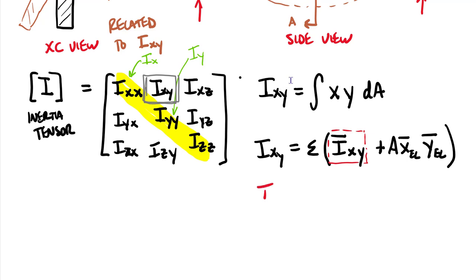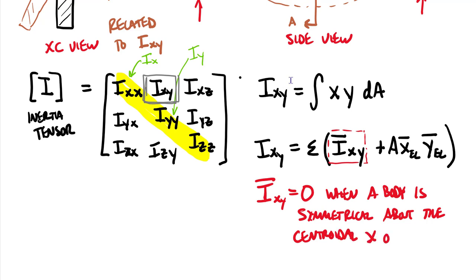One of the things that's pretty convenient about this equation is that quite often this I-bar-xy is zero. It turns out that our I-bar-xy is equal to zero when a body is symmetrical about the centroidal x or y axis.